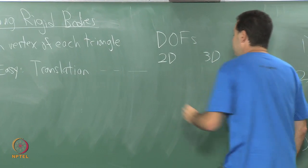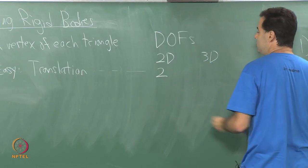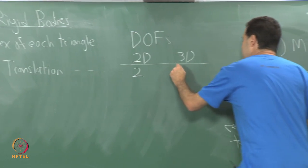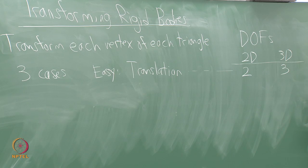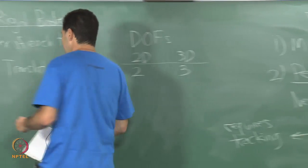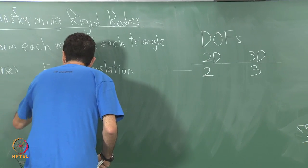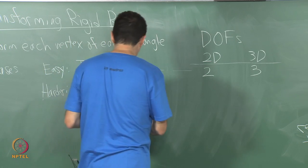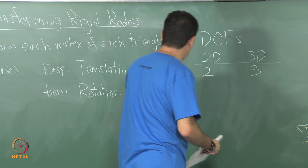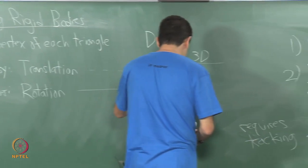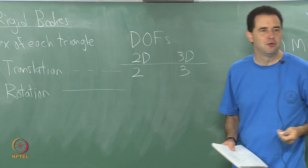For translation only, we have two degrees of freedom in 2D and we have three degrees of freedom in 3D. And this is really mathematically the easiest case to define, to understand, no problems really. The harder case is going to be rotation, which in 2D is very easy. How many degrees of freedom do we have for 2D rotation?